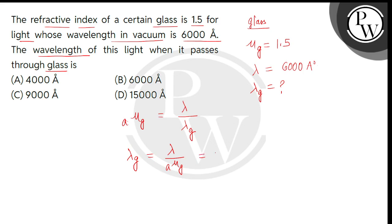The value of lambda is 6000 angstrom and A mu G's value is 1.5. We can also write this as A mu G. So bachyo, here we'll get the answer 4000 angstrom. So correct option is option A. Thank you.